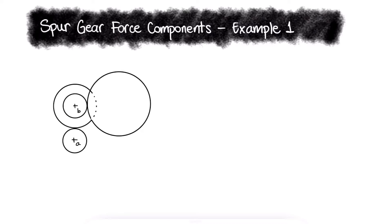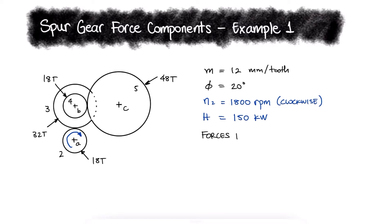The spur gears shown have a module of 12 millimeters and a pressure angle of 20 degrees. If the pinion, gear 2, rotates at 1800 revolutions per minute clockwise and transmits 150 kilowatts through the idler pair, which are gears 3 and 4 on shaft B, to gear 5 on shaft C, what forces are gears 3 and 4 transmitting to the idler shaft B?